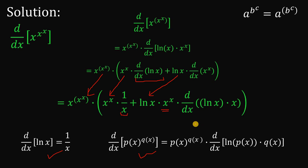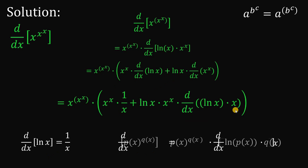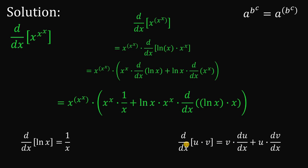Now, how do we get the derivative of ln of x times x? Again, we have a product, so we apply the product rule again: the derivative of u times v equals the second function times the derivative of the first, plus the first function times the derivative of the second. So let's apply this.